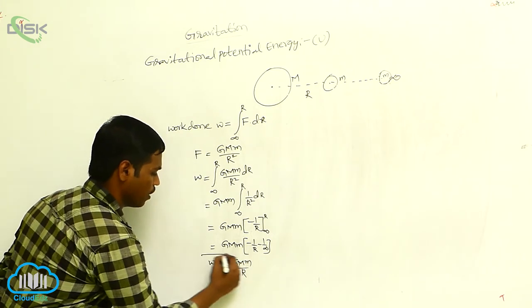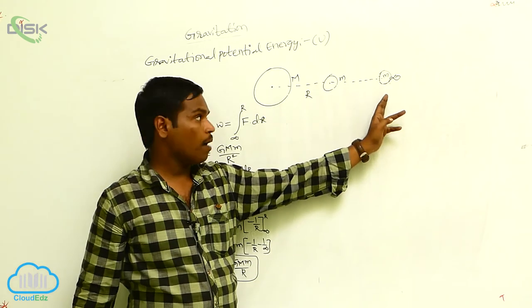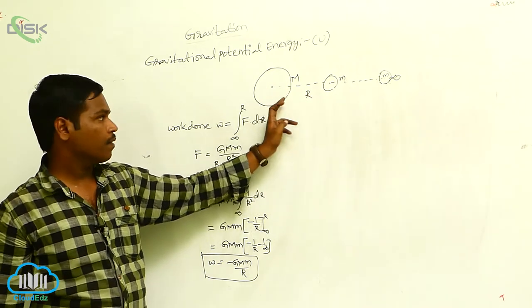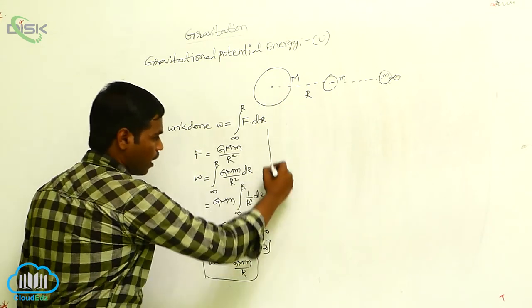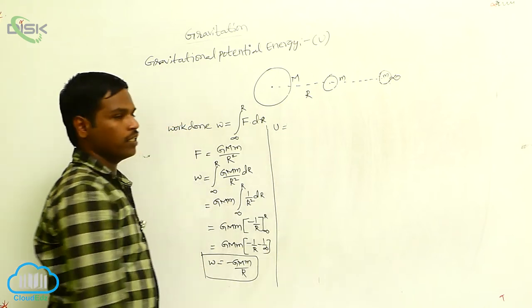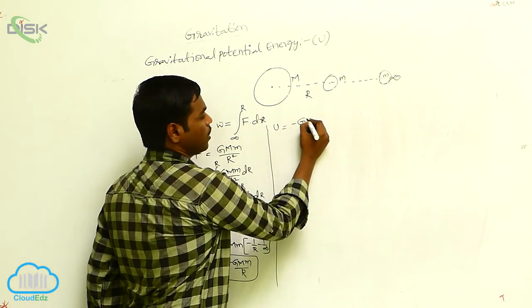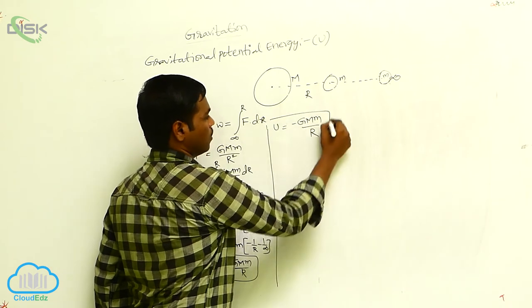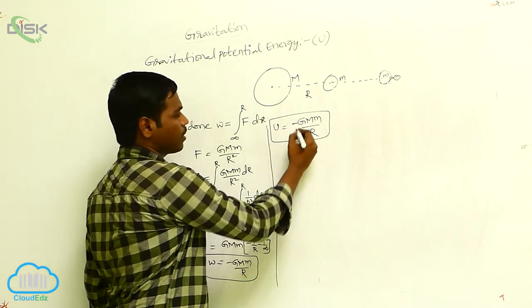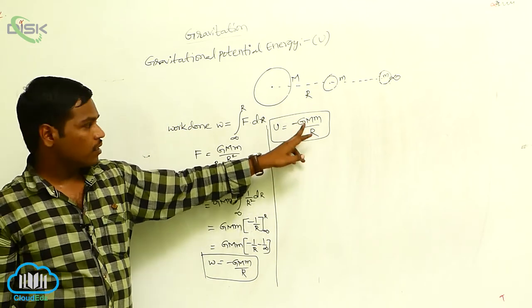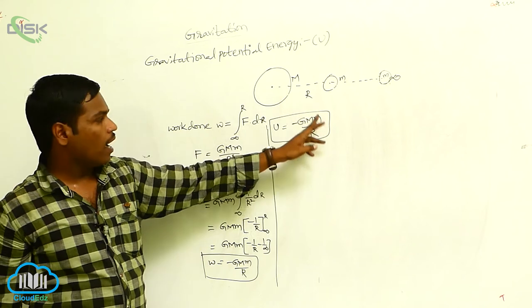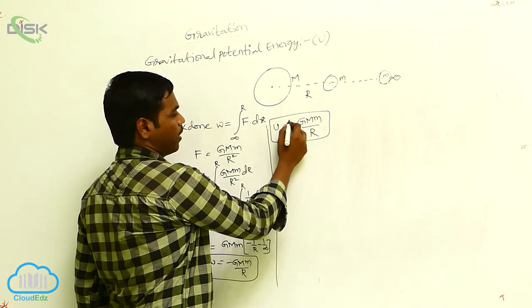This is the work done in bringing the small m mass from infinite distance to distance R from capital M. This work done is stored in the form of gravitational potential energy: U = −GMm/R. The negative sign denotes that the object is bound to the planet, which is why it carries a negative sign.